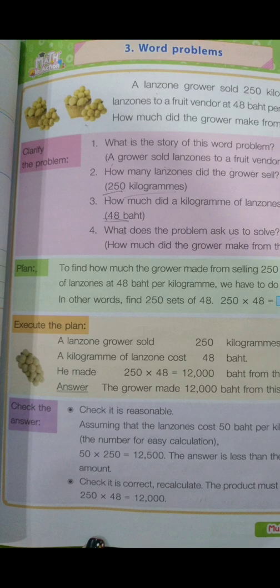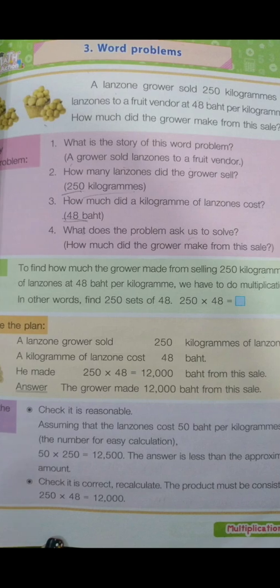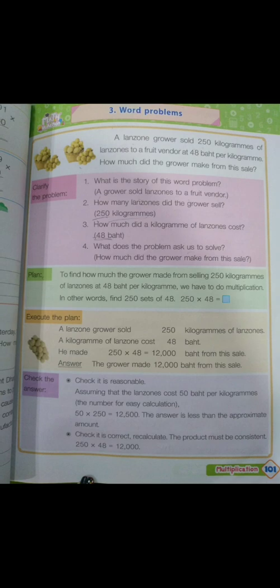Check the answer — is it reasonable? Assuming lanzones cost 50 baht, 250 times 50 equals 12,500. The answer is less than the approximate amount. Recalculate: the product must be consistent — 250 times 48 equals 12,000. Correct.